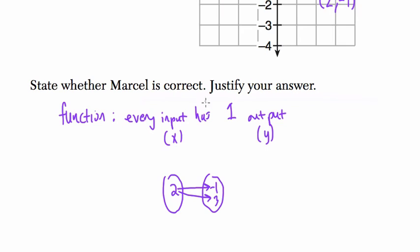And you could say, I'm not going to write it because my handwriting is really weak on this tablet. But you could say this is not a function because the input, 2, goes to both negative 1 and 3. And in a function, every input has one output.